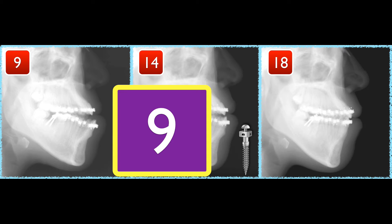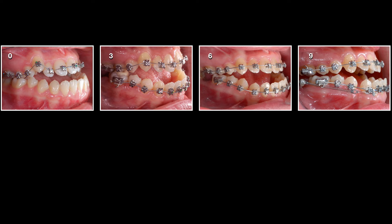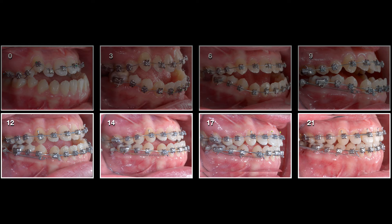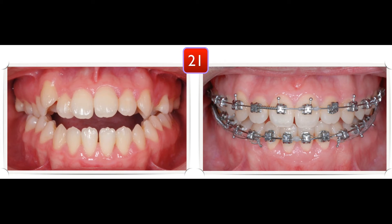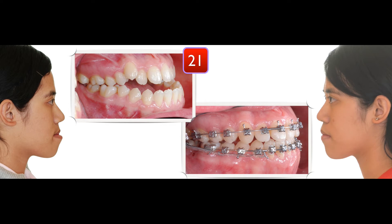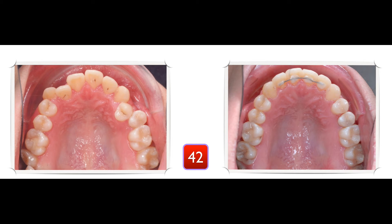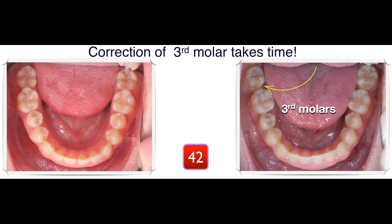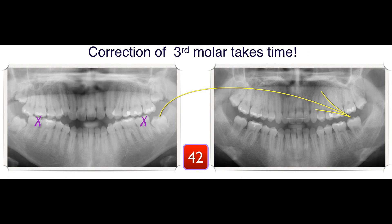With that buccal shelf appliance, within a short period of time — about 9 months — we were able to settle the bite. You will be surprised. This huge overjet and Class 3 discrepancy was solved within 21 months. We almost finished. But not yet — I spent another 21 months to finish this case. Why? Because the curve of Spee takes a lot of time. Curve of Spee is important. If they enrolled with a deep curve of Spee, it takes one to two additional months to correct. So curve of Spee is critical — but look at that result.